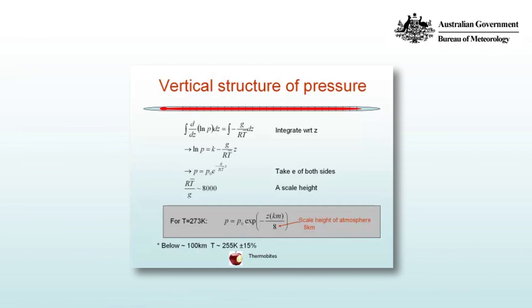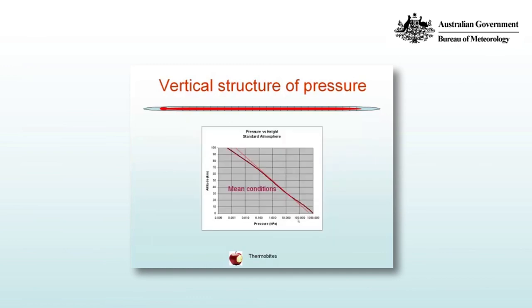Below 100 kilometers, t is approximately equal to 255 Kelvin plus or minus 15 percent. So with this equation for the vertical structure of pressure with our scale height we can plot that. That's the red line, the thin red line, and the thick red line is mean conditions. You can see how well the hydrostatic equation when integrated to give us vertical structure of pressure with height closely matches that for that scale height.